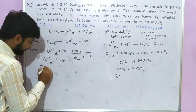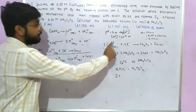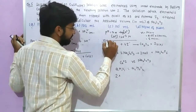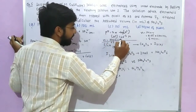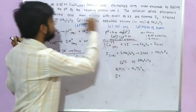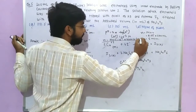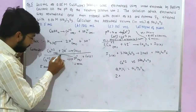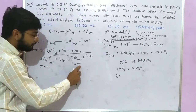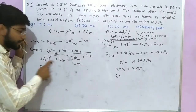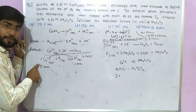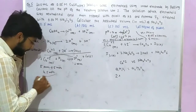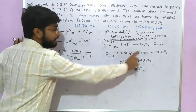The H⁺ formed after electrolysis: molarity of H⁺ = 10⁻² molar, volume = 100 mL, so moles of H⁺ = 10⁻² × 100 = 1 millimole. Since 2H⁺ are produced per Cu²⁺ consumed, 0.5 millimoles of Cu²⁺ reacted, giving 1 millimole of H⁺. Therefore, remaining Cu²⁺ = 5 − 0.5 = 4.5 millimoles.